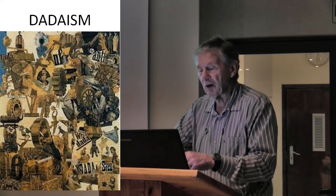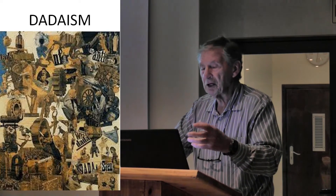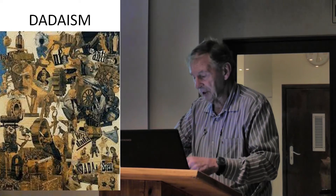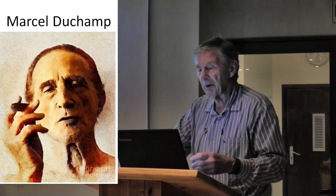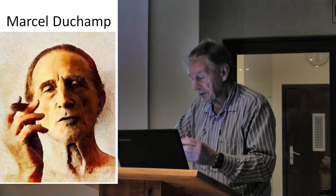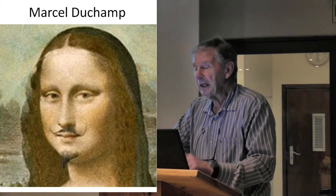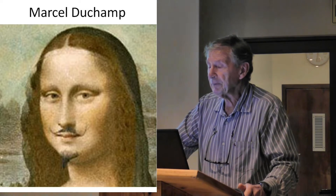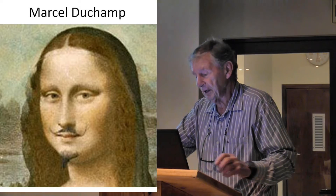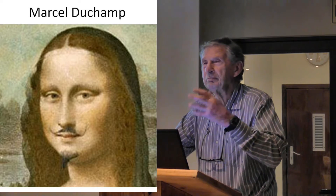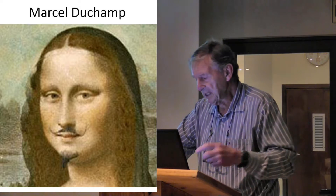He's an interesting character. This is classical Dada — just a conglomeration of all kinds of things put together. This is Marcel Duchamp, an interesting character. He didn't paint much. Here we've got one of his paintings of the Mona Lisa with a little beard and moustache. They just didn't care a damn — that's what they were all about.